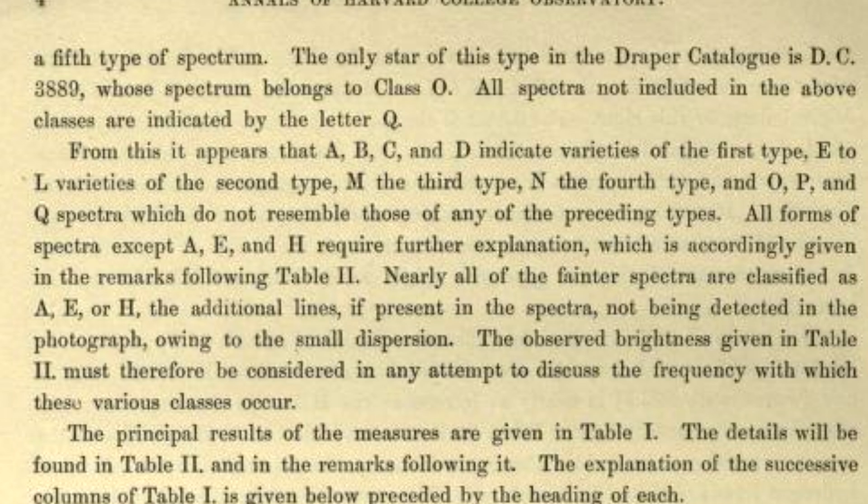Class Two included E, F, G, H, I, K, and L — with no J, you'll notice. Class Three was M, and Class Four is N, which didn't appear in this catalogue. But they also identified a new group, the Wolf-Rayet stars, which got the letter O.